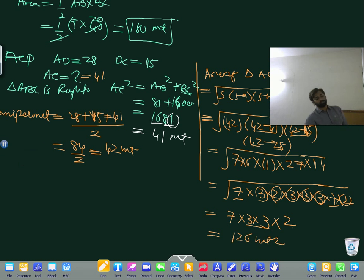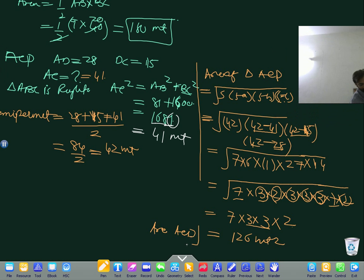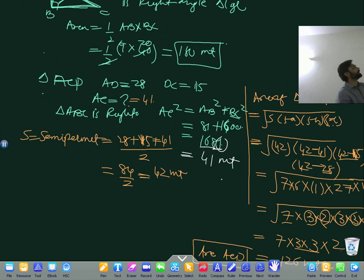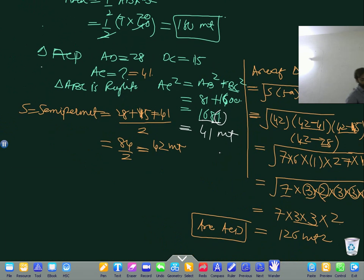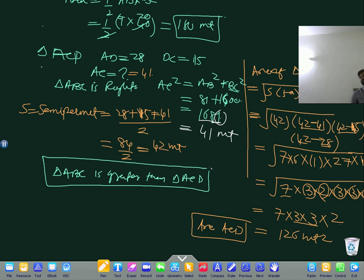So the two areas: area of triangle ACD is 126 meter square, and area of triangle ABC is 180 meter square. Which is greater? Triangle ABC is greater than triangle ACD. ABC has done more work compared to ACD. Is it clear?